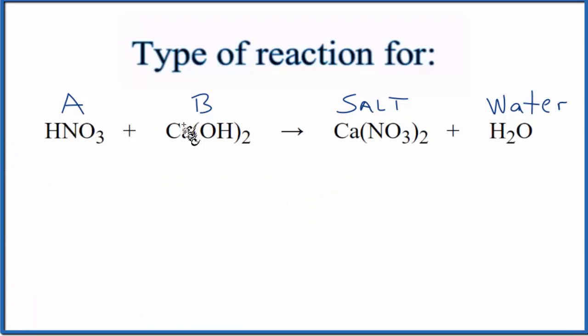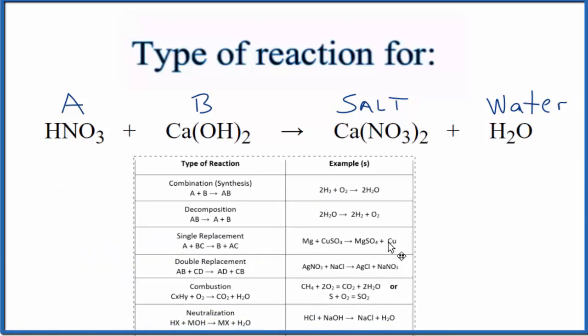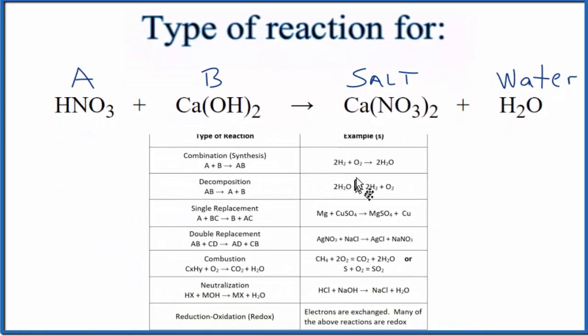So we have an acid and a base. They neutralize each other to give us a salt and water. Let's take a look at a table of common types of chemical reactions so we can see what's going on.